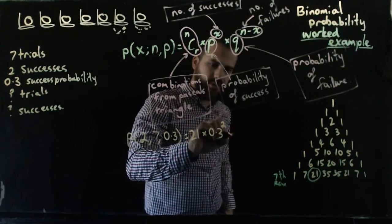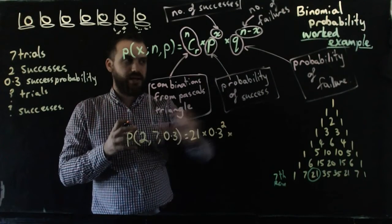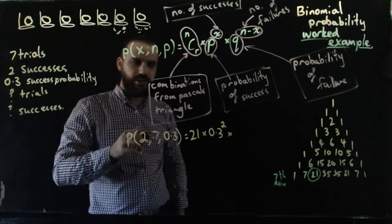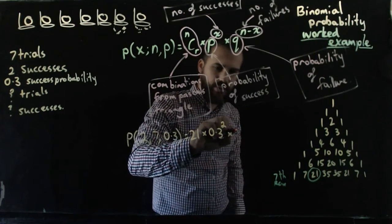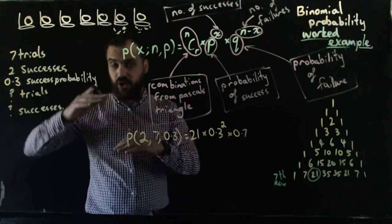Times q—that's the probability of failure. So q is the probability of failure, so that's 0.7. We know that the probability of failure is 0.7 because it's the complement of whatever the probability of success is.